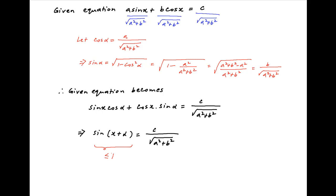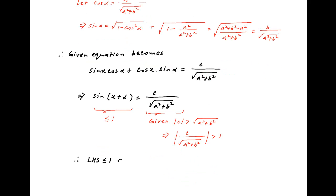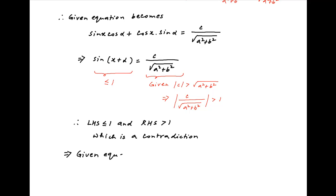We are given that |c| > √(a² + b²). It therefore follows that |c| upon √(a² + b²) is strictly greater than 1. Therefore the left-hand side is always less than or equal to 1 and the right-hand side is strictly greater than 1, so they can never be equal. It therefore follows that the given equation has no solution, which is the required answer.